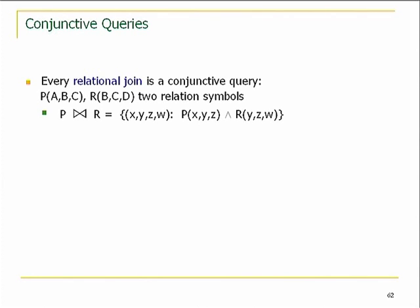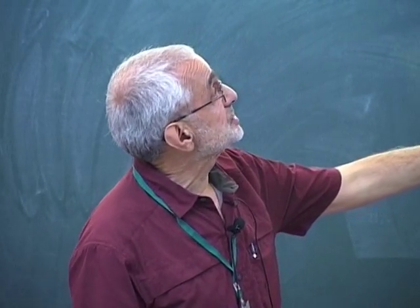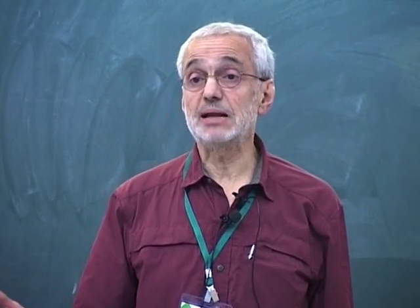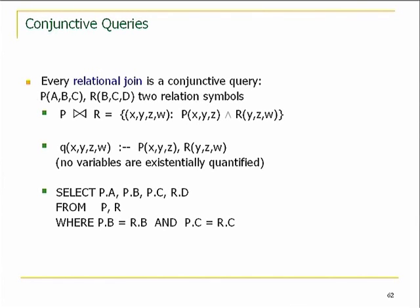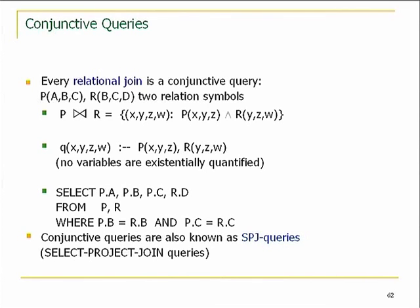Every relational join we saw yesterday is a conjunctive query — specifically one where we don't have any variables existentially quantified, meaning all variables occurring on the right occur on the left. That's a quantifier-free conjunctive query. Conjunctive queries, if you talk to database practitioners, they call them SPJ queries — Select, Project, Join — where the SELECT is only for conjunctions of equalities. These are known as SPJ queries.